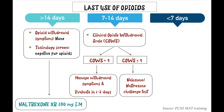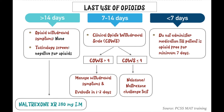If your patient has used opioids in less than seven days, you do not give them this medication until the patient is opioid-free for a minimum of seven days. Ask them to come back after seven days of clean time, and then follow the same algorithm we discussed for the seven to fourteen day period. This is a brief overview of how you assess before initiating Vivitrol.